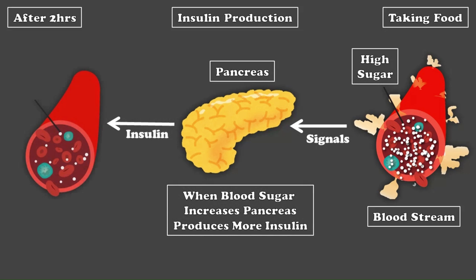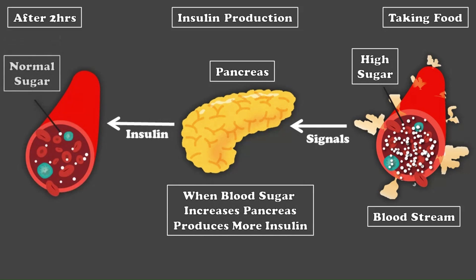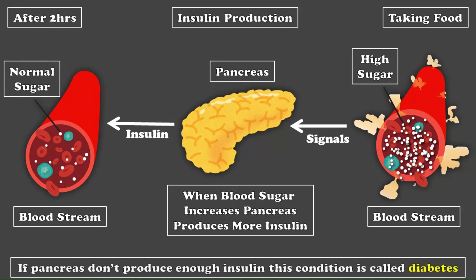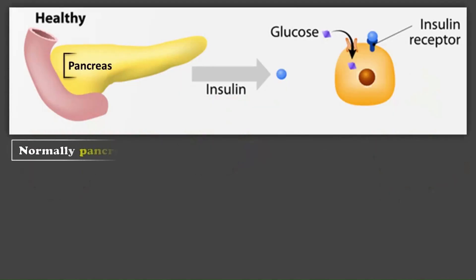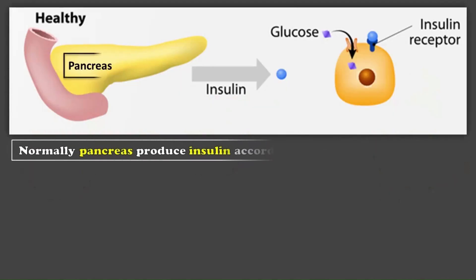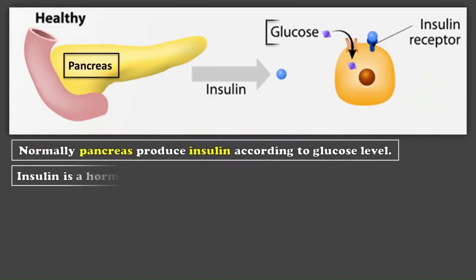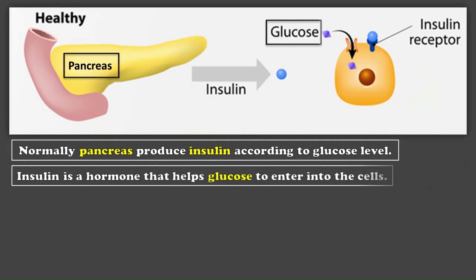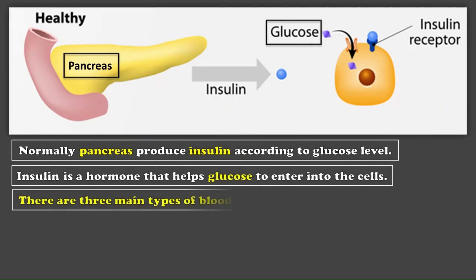If the pancreas does not make insulin, then such a condition is called diabetes. Normally, the pancreas makes as much insulin as there is glucose in the blood. Insulin is a hormone that helps glucose enter into the cells of the body.